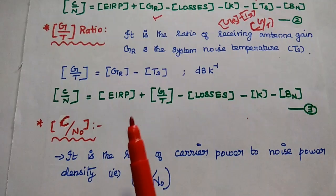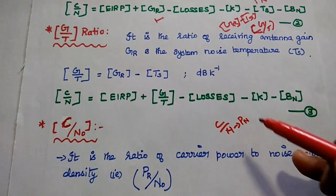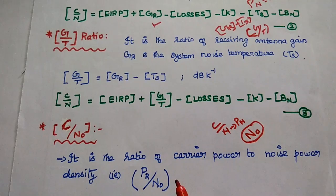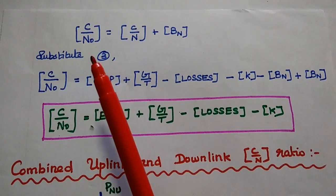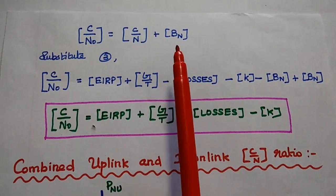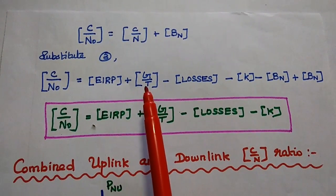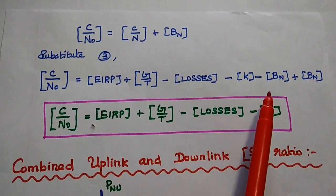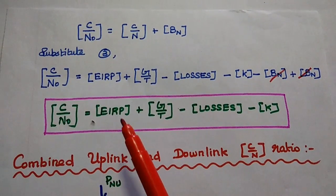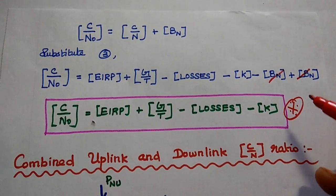Next, in general we represent the carrier to noise ratio as C/N, where N is the noise power. But for practical considerations, we have to take the noise power density, represented as PR/N₀ or C/N₀. This C/N₀ can be represented as C/N + BN, where BN means noise bandwidth. Substituting this into the third equation, C/N₀ = EIRP + G/T − losses − K. The BN terms cancel out. This is the expression for carrier to noise power density, a very important equation in satellite link analysis.